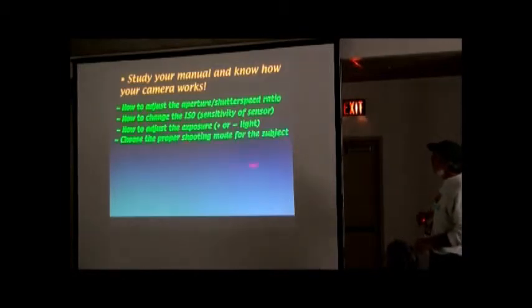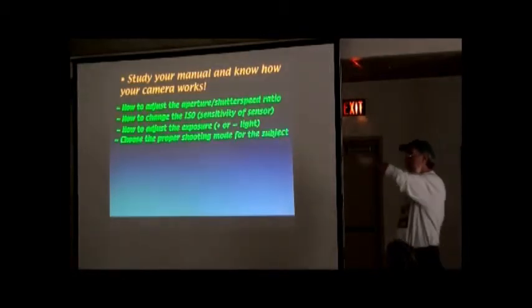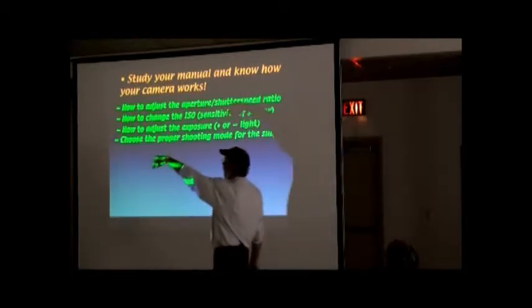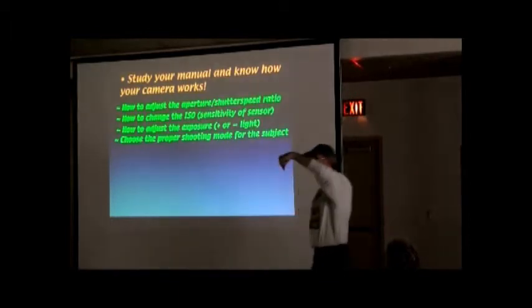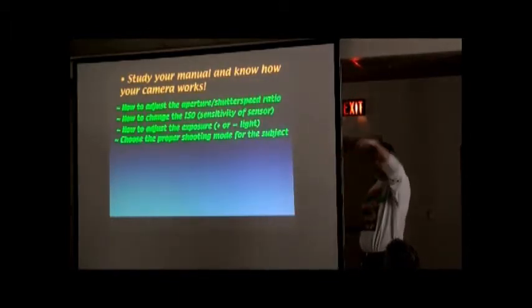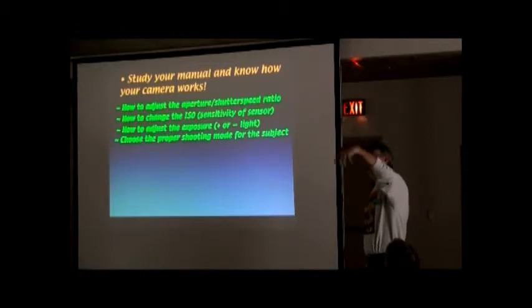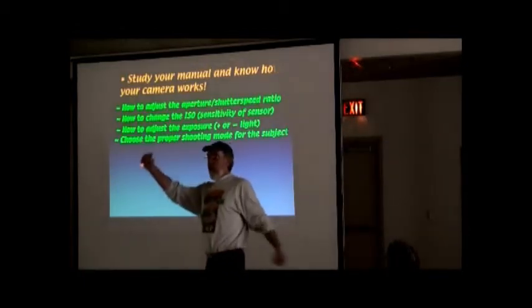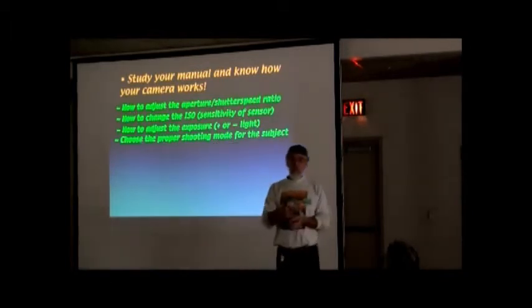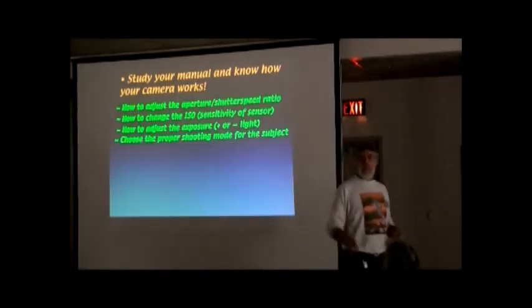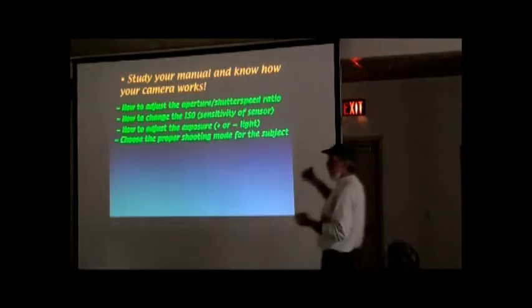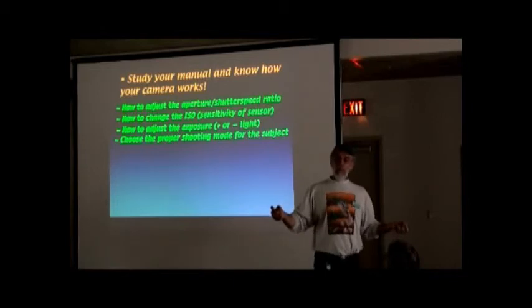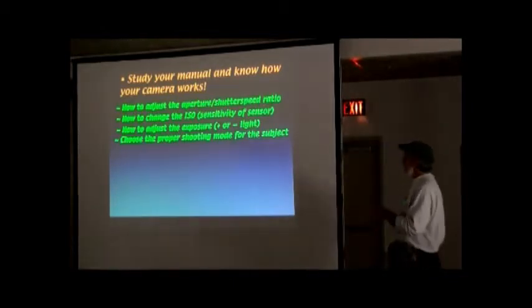Choose the proper shooting mode for the subject. Notice the little dial on top? On one side it's got A, P, B, N, and the other side it's got little pictures. I think those are there. What are those for? Those are for you to choose the proper shooting mode. You know, if you've got an image of a guy running, that means it's going to give you shutter speed. It's going to be the big priority because you want to stop the action. It's got a flower, it's going to give you, if it's a moon, it's going to give you something else. You need to know what those mean.